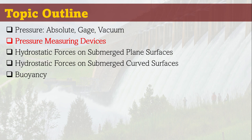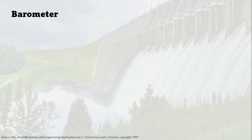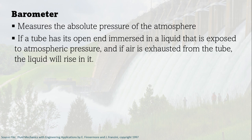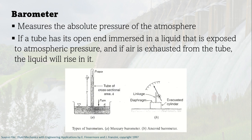Now that we understand the different pressures — absolute, gauge, and vacuum — it's important to know the different measuring devices. An instrument that measures the absolute pressure of the atmosphere is called the barometer. For a water barometer, if a tube has its open end immersed in liquid exposed to atmospheric pressure and the air is exhausted from the tube, the liquid will rise in it. We have two types: a mercury barometer and an aneroid barometer.